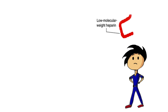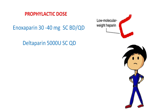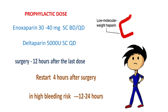In dealing with a patient under low molecular weight heparin at a prophylactic dose — i.e., enoxaparin 30–40 mg or dalteparin 5,000 units — surgery should be done 12 hours after the last dose. It can be restarted 4 hours after surgery, but in high bleeding risk patients we might have to wait 12–24 hours.